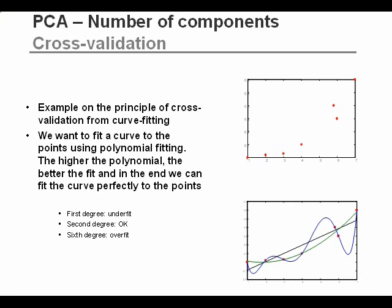We will first show the principle of cross-validation with an example from curve fitting — this is not PCA, but just an example to show the principle. On the plot, we can see seven points, and we want to fit a curve to these seven points. We can fit, for example, a first-order polynomial, second-order, etc. In the lower plot, you can see a first-, second-, and sixth-degree polynomial fit.